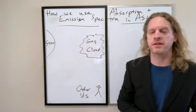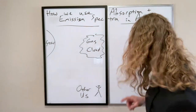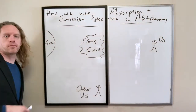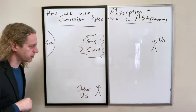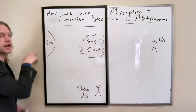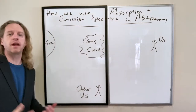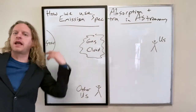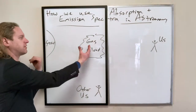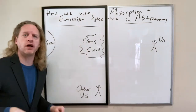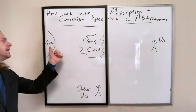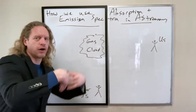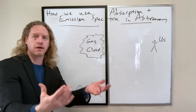Let's talk about how we use different types of spectra in astronomy. Imagine you have some star, and nearby there's a gas cloud sitting light years away. In the absence of that star, that gas cloud would just be sitting there completely frozen — basically at a temperature near absolute zero.